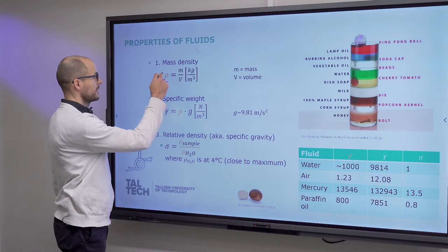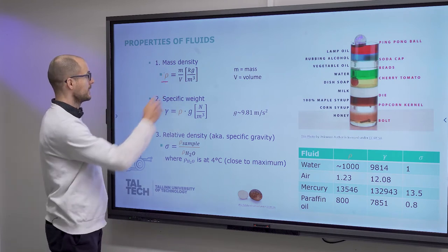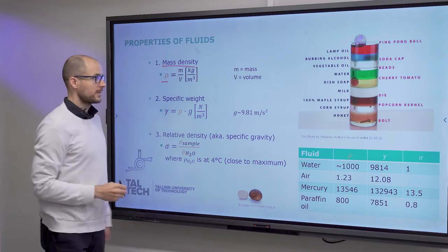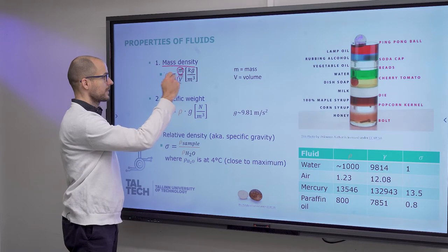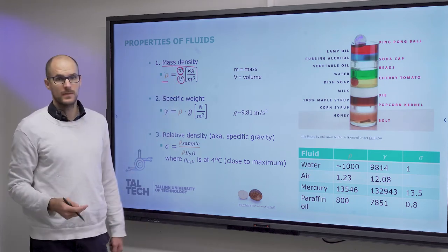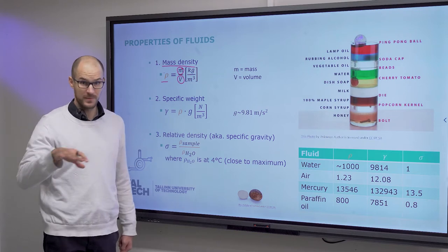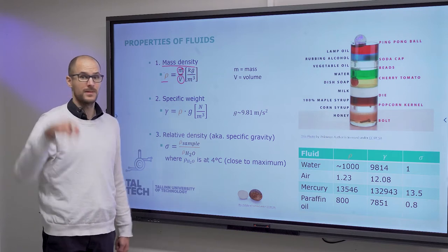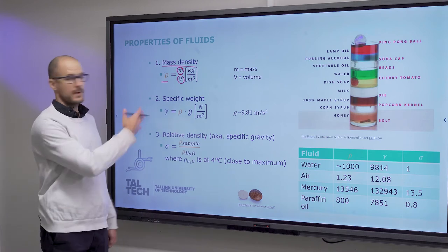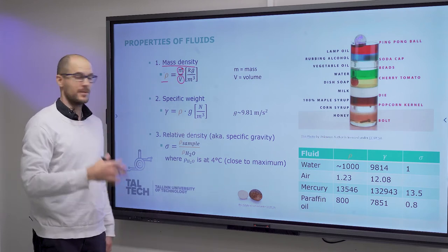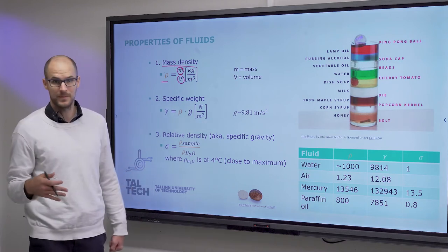The first variable is density — specifically mass density — which is mass over volume, quantified in kilograms per cubic meter. We start from the ground and build on it step by step. You have probably heard about density in secondary school, but now we will use it for some other things as well.